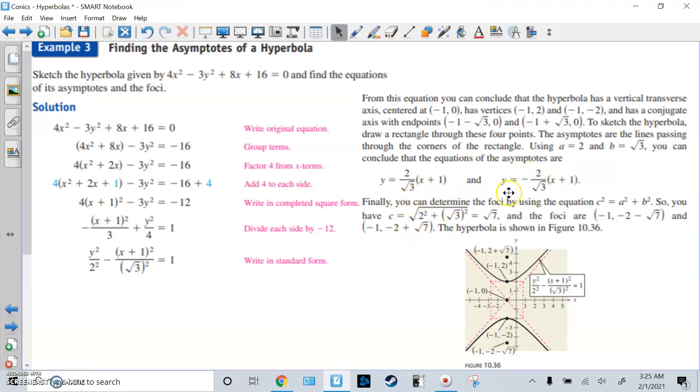Finally, you get the foci by using the equation C squared equals A squared plus B squared. Fill in a and b. Solve, you get root 7. The foci are going to be root 7 away from the center. If it's vertical, you add and subtract that to the y value, which was 0. So that's why it has just negative 1, negative 2 minus root 7, and negative 1, 2 plus root 7.